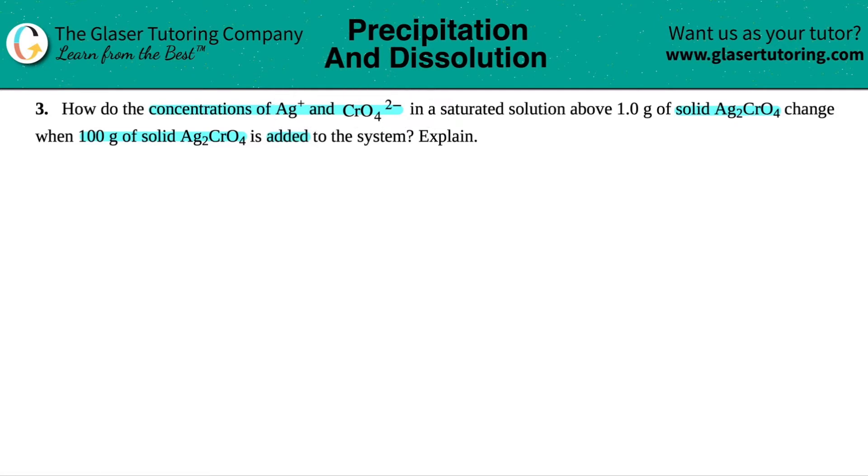Now we're talking about dissolving a solid, right? Whenever you're starting off with a solid and they're asking for the concentrations of the ions, we're just going to write a balanced equation. So here we go. We're going to start with the Ag2CrO4. And they're telling us that it's a solid, right?